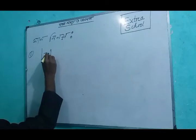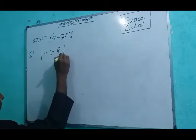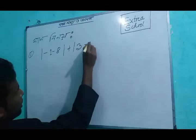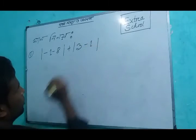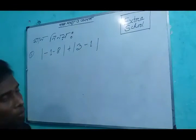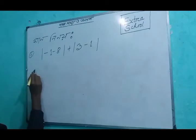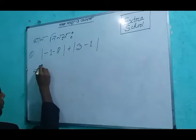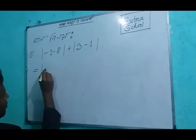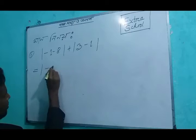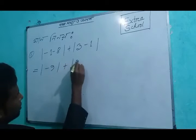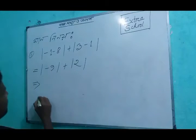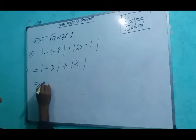What is the modulus of minus 1 minus 8? We get the modulus of minus 1 minus 8, which is minus 9 plus 2. So we have the modulus of minus 9.